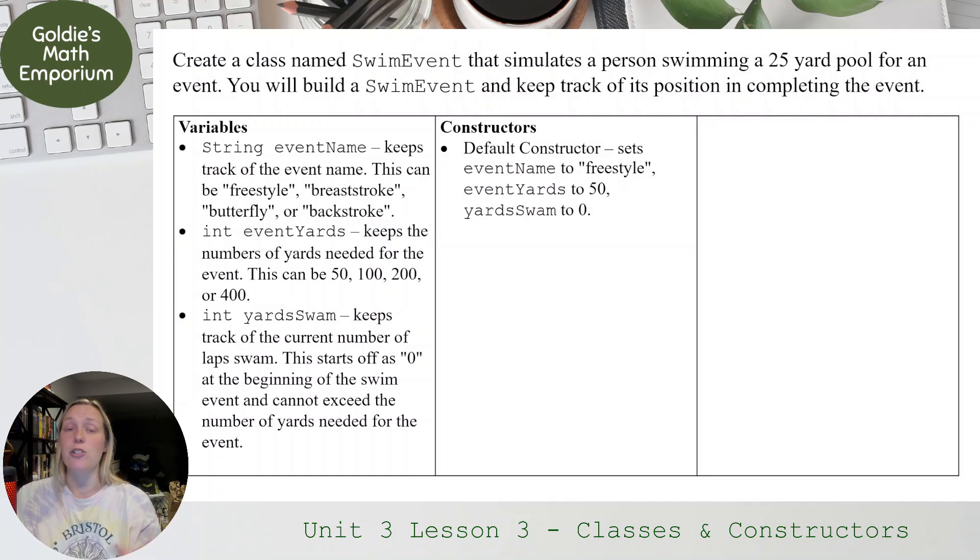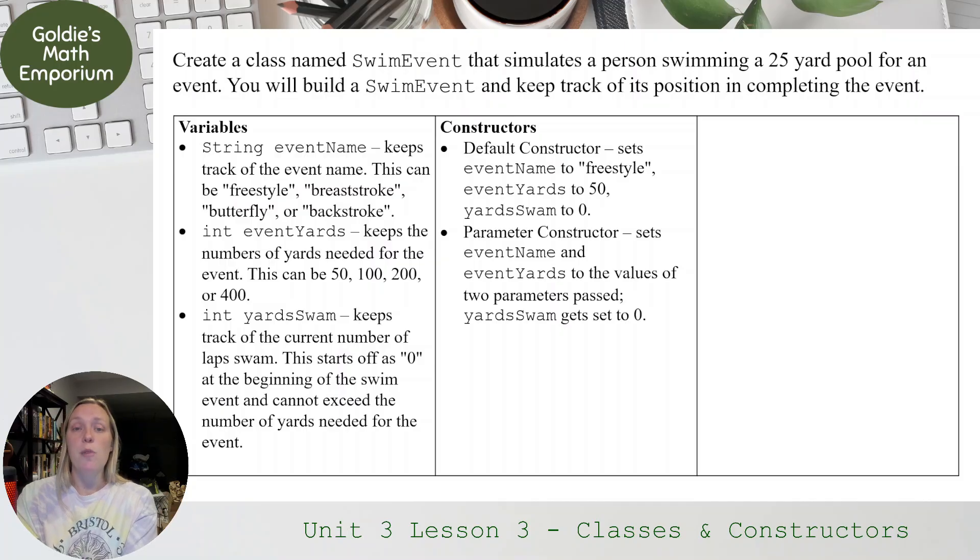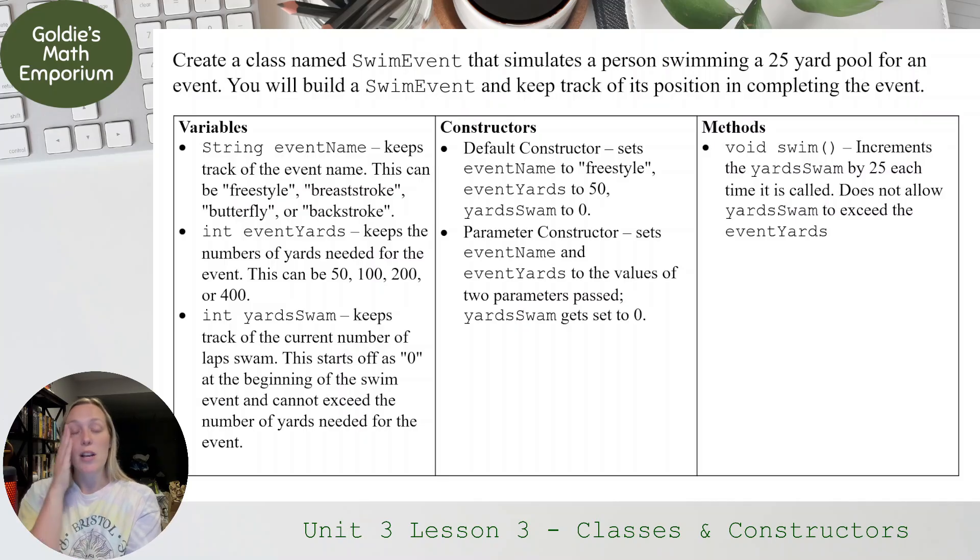Next are the constructors. So this is going to want you to make a default constructor that sets eventName to freestyle, eventYards to 50, and yardsSwim to zero. Pretty straightforward default constructor. Parameter constructor is going to set eventName and eventYards to the values of the two parameters passed, but yardsSwim gets set to zero because when a swim event is created, you haven't swam anything yet. So that's why that gets set to zero. So only two constructors before we move on to methods.